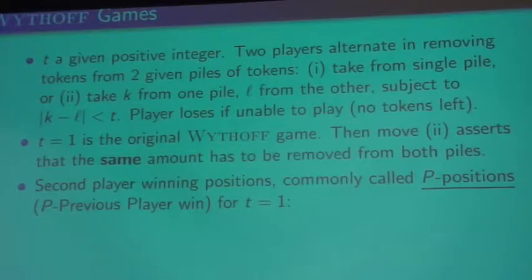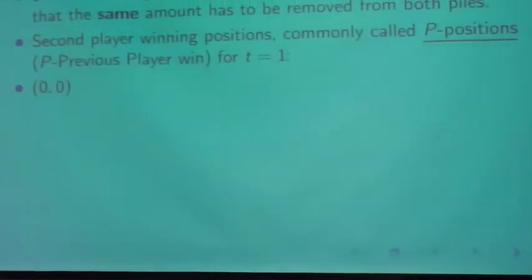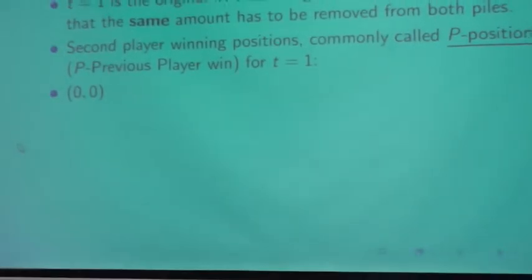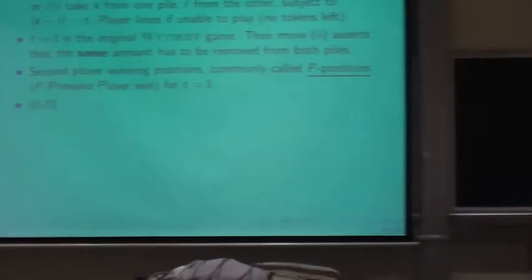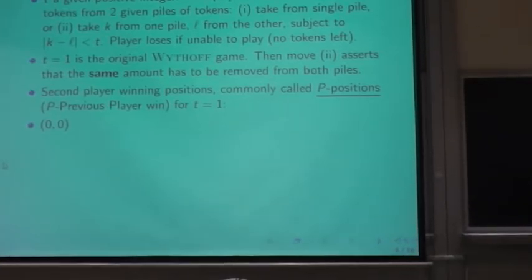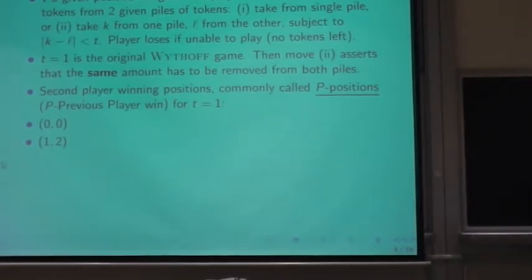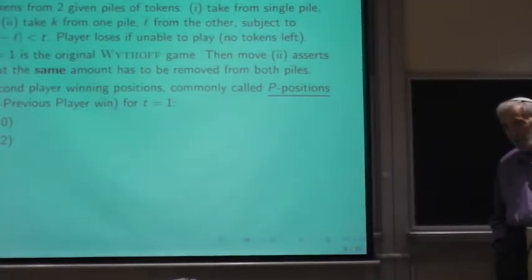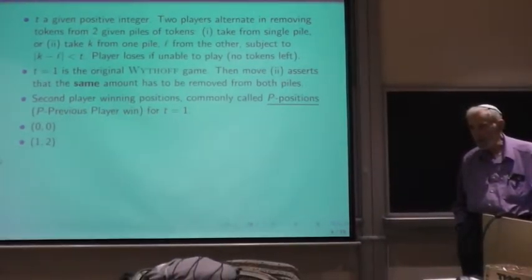So when T is equal to 1, that's actually the original Wythoff game, then as a move, T equals 1 asserts that the same amount has to be removed from both piles. So we define second-player winning positions, commonly called P positions. P stands for previous player win. And for T equals 1, they look as follows. 0,0 is a P position because by default, the first player can't do anything, so the second player wins.